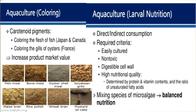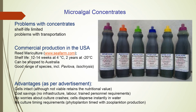Algae as a coloring agent: if carotenoid pigments from algal sources are used, they can color the flesh of fish and the gills of oysters, increasing product market value. For larval nutrition, consumption can be direct or indirect. Required criteria include: easily cultured, non-toxic, digestible cell wall, high nutritional quality determined by protein and vitamin content, and a good ratio of unsaturated fatty acids. Mixing species of algae ensures balanced nutrition for larvae.